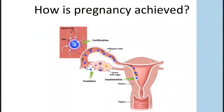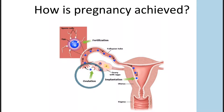Once a month, a certain number of follicles are recruited. Each follicle has a microscopic egg in it that we cannot see. One follicle will grow to be the dominant follicle and the rest will die off. When that follicle reaches a certain size, there are signals in the body that tell the egg to release from the follicle, and that process is ovulation.